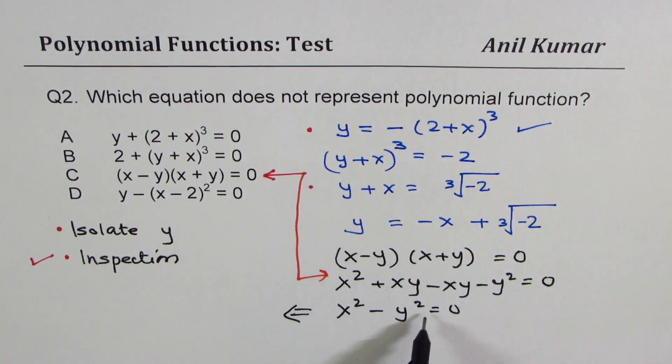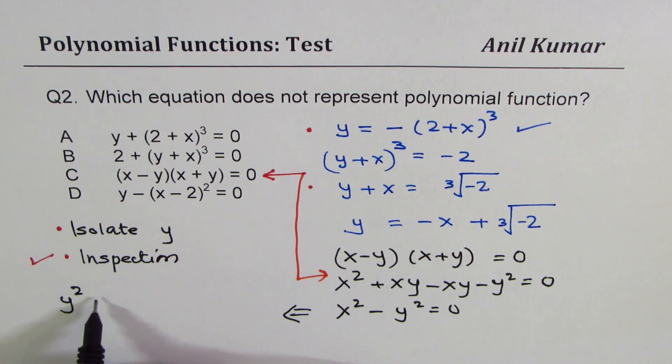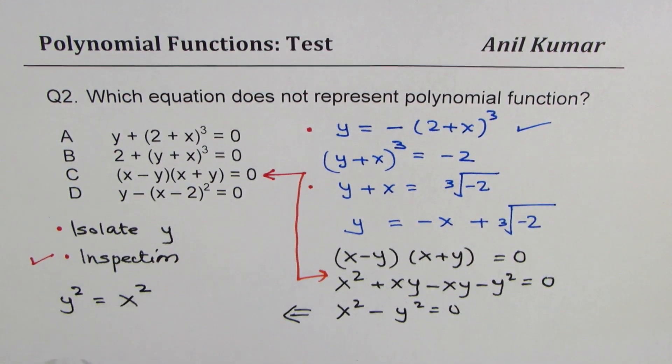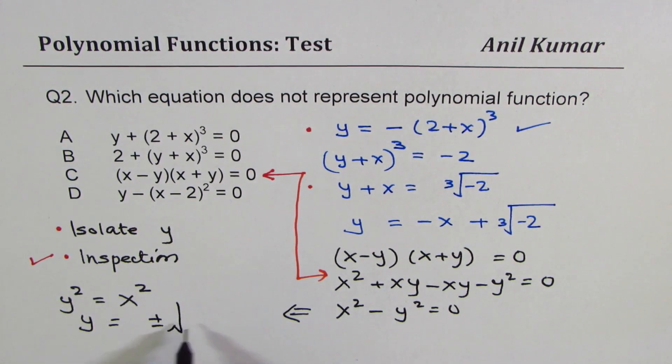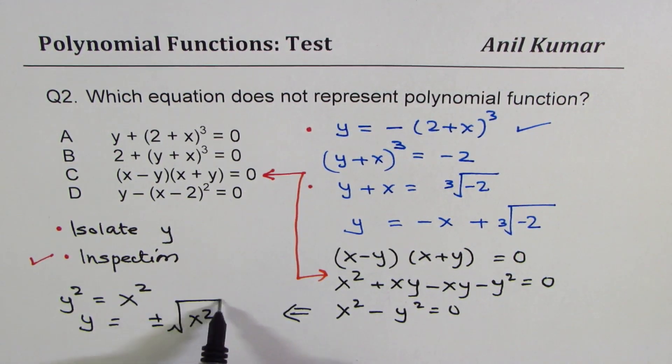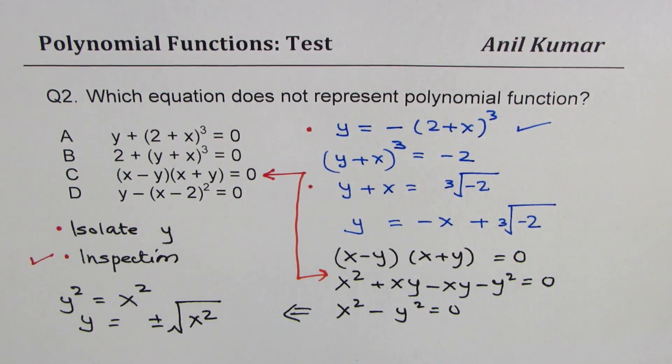Now from here, we can write y square equals to x square. Or what is y equals to? Y equals to plus and minus square root of x square. Do you see that? Plus and minus square root of x square.